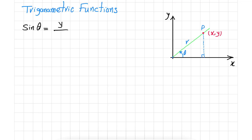Then we have cosine of theta. The length of the adjacent side, which is this one, has length X. So cosine of theta is X over hypotenuse R.